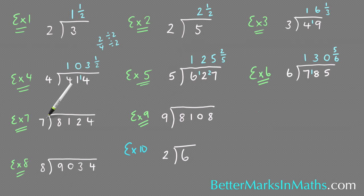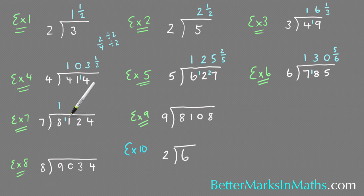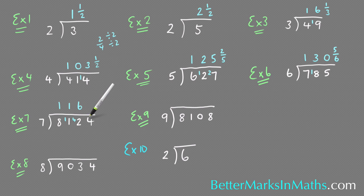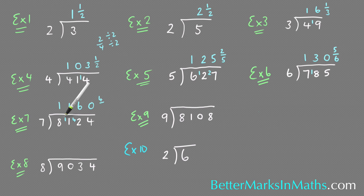Example 7: how many 7s in 8124? How many 7s in 8? There's 1 with 1 left over. How many 7s in 11? There's 1 with 4 left over. How many 7s in 42? There's 6 with none left over. How many 7s in 4? There are none, and that 4 is left over, so the remainder here would be 4 sevenths — 4 over 7.